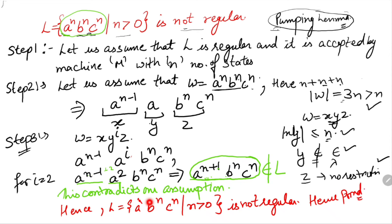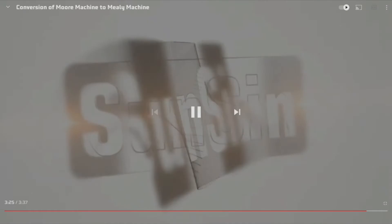This is all about this example: L equals a raised to the power n, b raised to the power n, c raised to the power n, such that n greater than 0 is not regular. I hope the example and the proof are clear to you. If you have any doubt or any queries, please mention in the comments below — we will definitely get back to you. Thank you for watching this video.